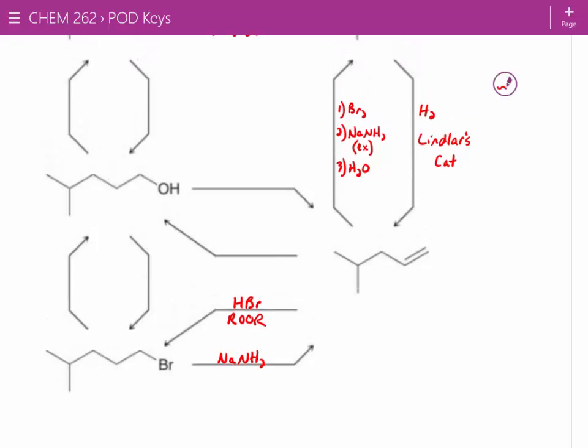If we want to do the going to the alcohol, what reagents would we need? BH3, THF. Yep. Hydroboration, oxidation. So that's two steps. And it takes hydrogen peroxide and NaOH.